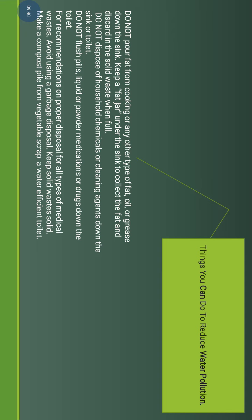The question arises: how can we reduce water pollution? Some steps we can take: do not pour fats, oils, or grease down sinks. Keep a jar to collect and dispose of solid fat when full. Do not dispose of household chemicals down sinks or toilets. Do not flush pills, liquids, powders, medications, or drugs down toilets. Follow proper disposal methods for all types of medical waste. Avoid using garbage disposals — make compost piles for vegetable scraps instead. Use water-efficient toilets.